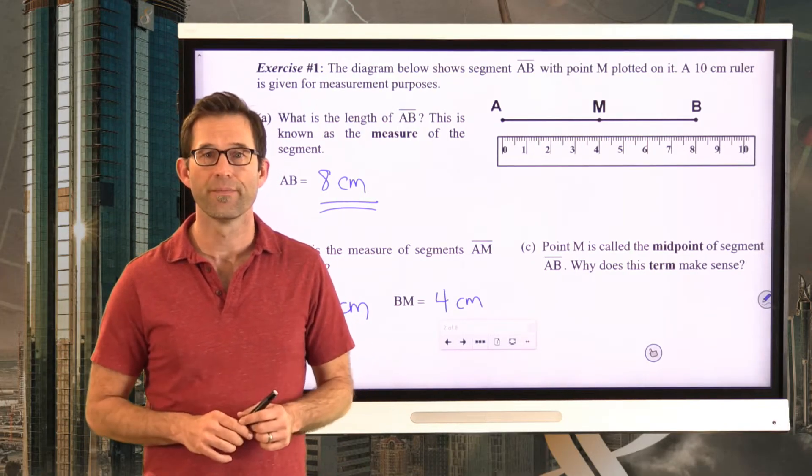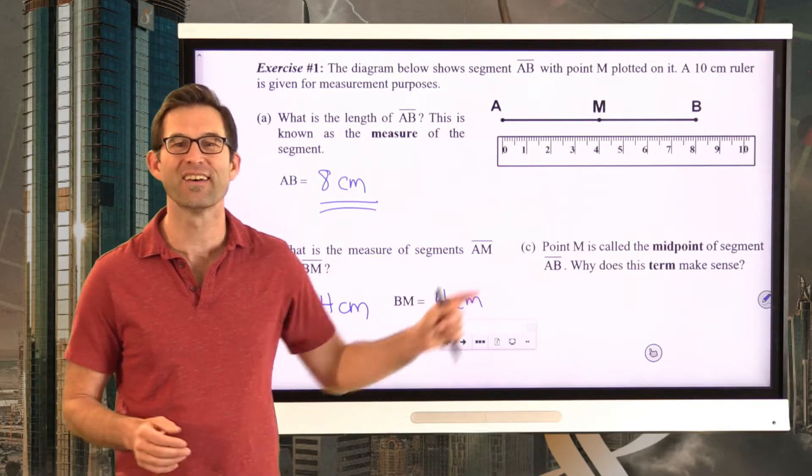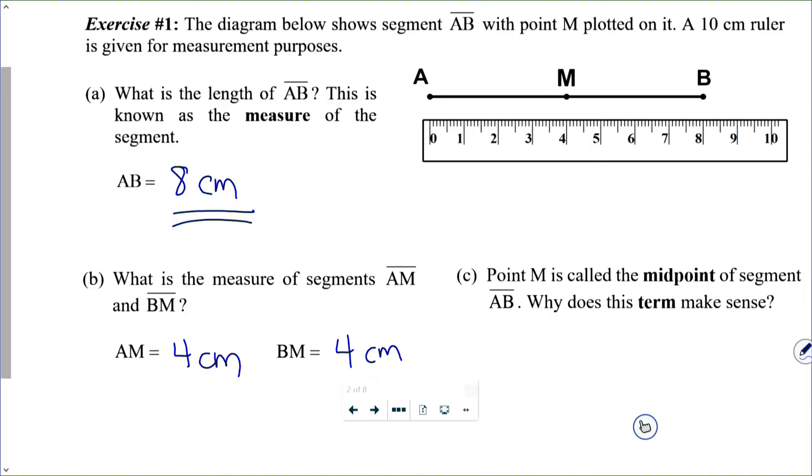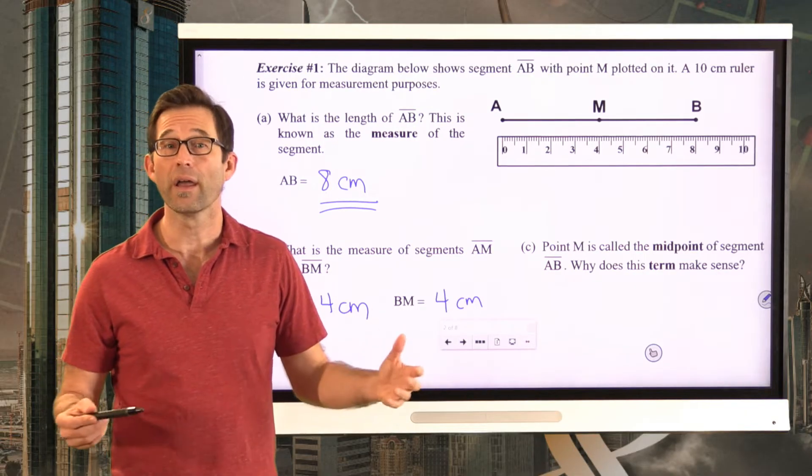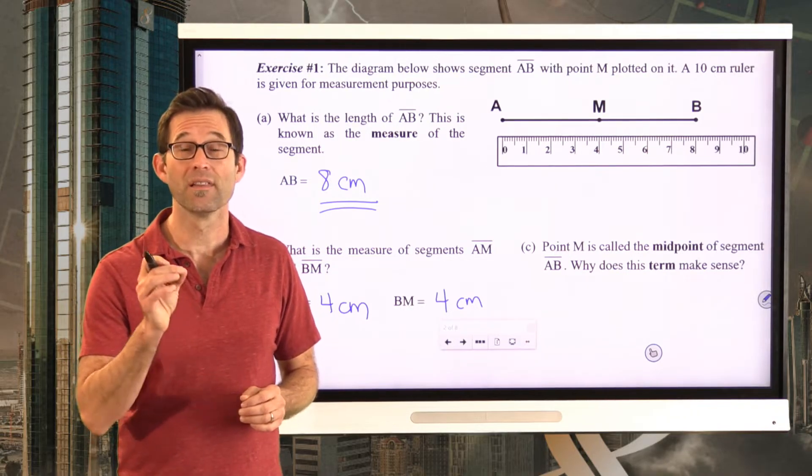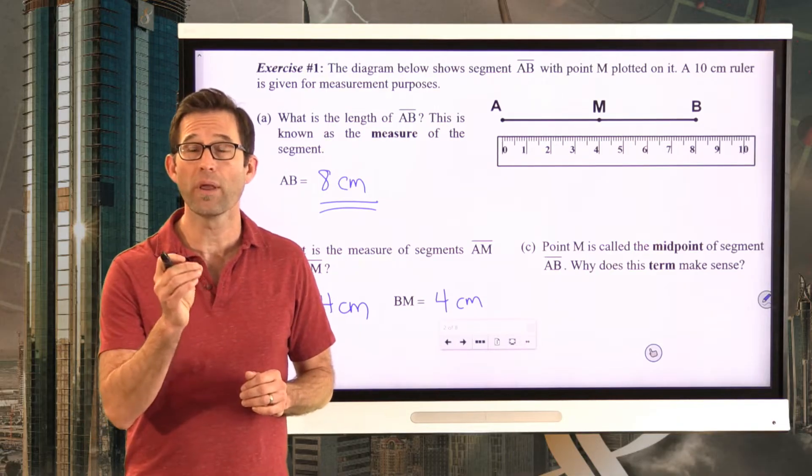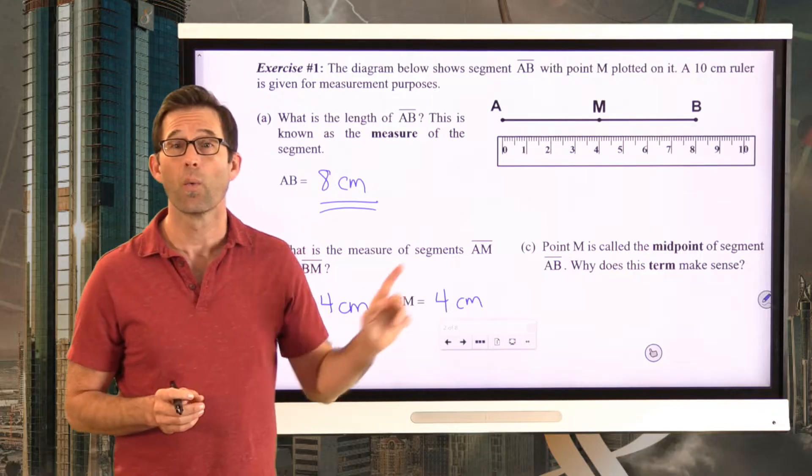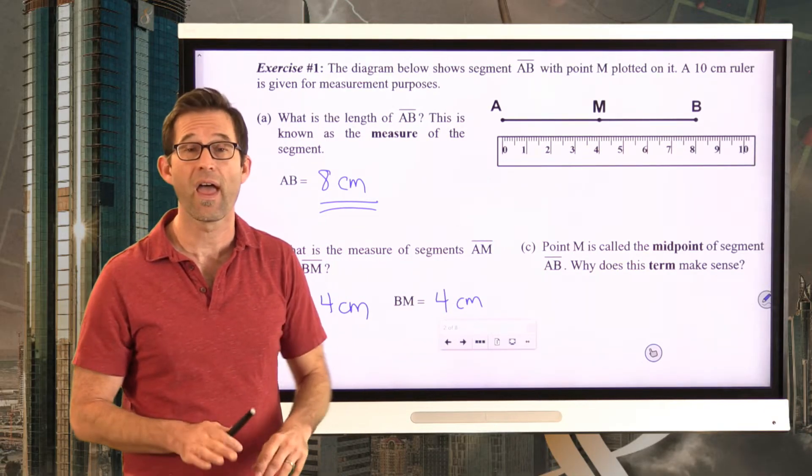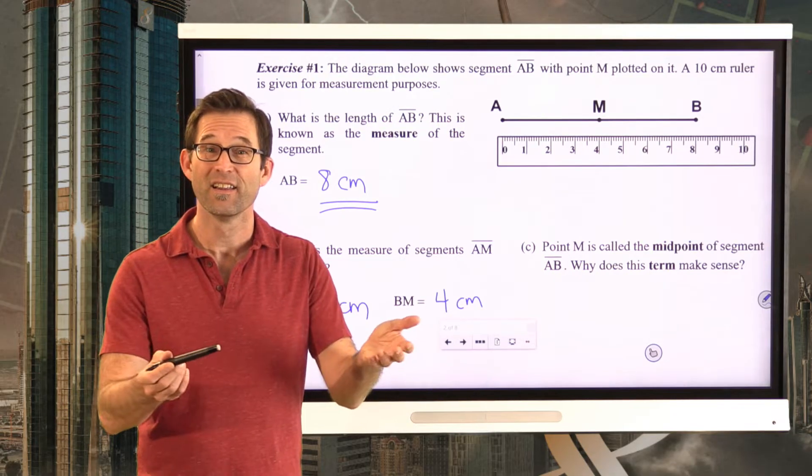Now, our first piece of terminology for the day in letter C. Point M is called the midpoint of segment AB. Why does this term make sense? Try to write something down for letter C. Well, you could write down a variety of things. You could say, well, it's because M lies in the very middle of the line segment. Or, because point M lies literally halfway between points A and B. Any answer like that would be perfectly right. So what a midpoint does on any segment is it lies at a place where it creates two segments that are each half the length of the original segment and are the same length as each other. Every line segment has one and only one point right in its middle. And we call it the midpoint.